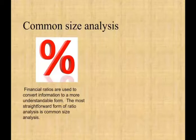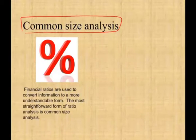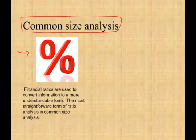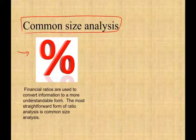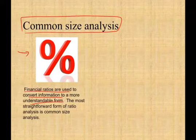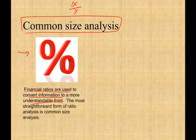When we start performance evaluation, a good way to start is to use common-size analysis. What is common-size analysis? Basically factoring the size out by using percentages, ratios, vertical and horizontal analysis, and so on. Financial ratios are used to convert information to a more understandable form. A financial ratio is simply x divided by y — taking two figures and dividing them by each other. The most straightforward form of ratio analysis is common-size analysis.